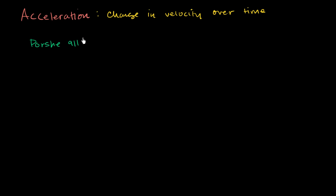They'll say that a Porsche 911, they'll literally measure it with a stopwatch, can go 0 to 60 miles per hour in, let's say, 3 seconds. So although officially what they're giving you right here are speeds, because they're only giving you magnitude and no direction, you can assume that it's in the same direction. We could say 0 miles per hour to the east to 60 miles per hour to the east in 3 seconds.